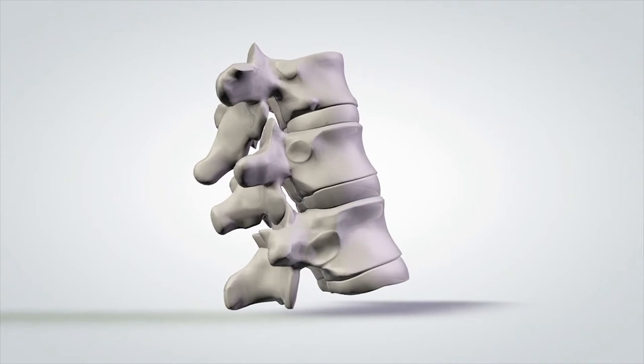Each disc is a flat, circular capsule about an inch in diameter and one quarter inch thick. They have a tough, fibrous outer membrane and an elastic core.